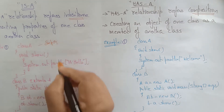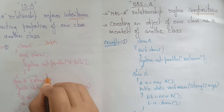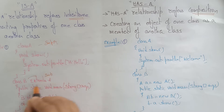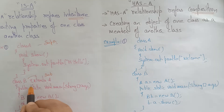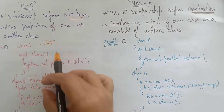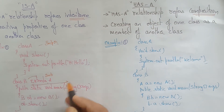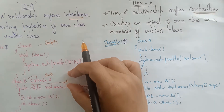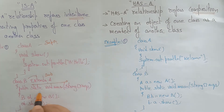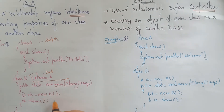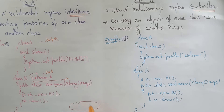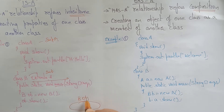Let's see this with an example. Class A is the super class, class B is the sub class, and class B extends class A. Whenever class B extends class A, class A is fully occupied within class B. When the main method executes, a B object is created.